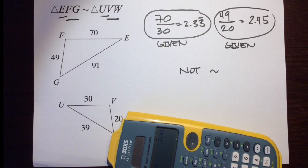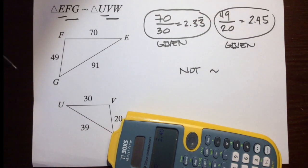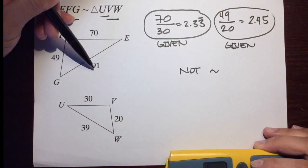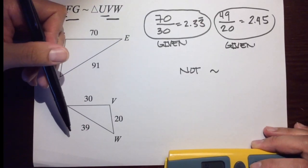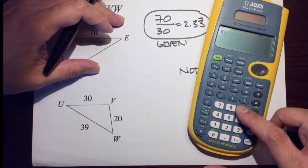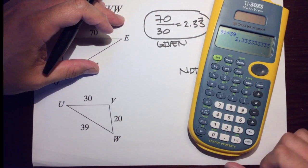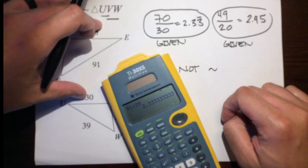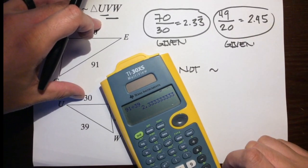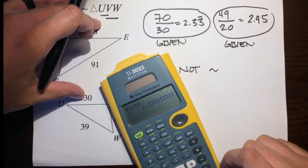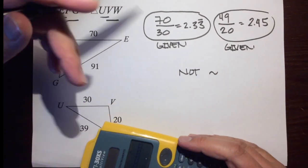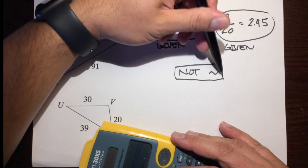Not similar because those sides are not proportional. We could go on and compare 91 over 39, which equals 2.33 — so 2 out of 3 are proportional. But we have to get all 3 sides proportional. If they're not all proportional, then not similar. That's your final answer.